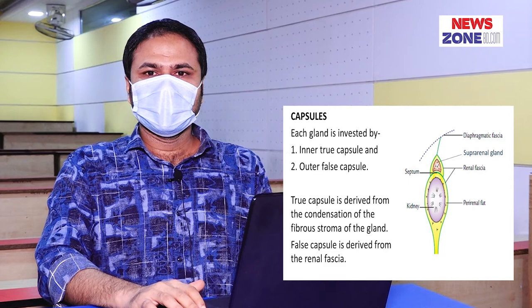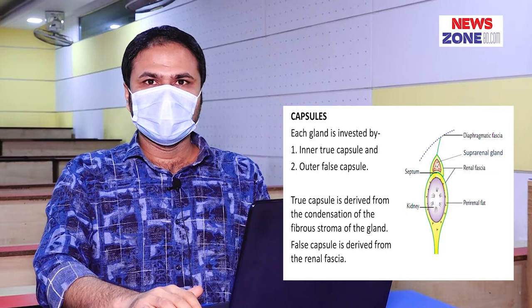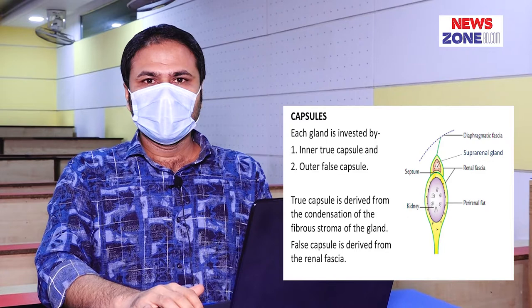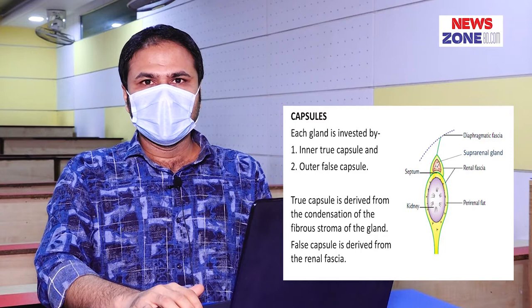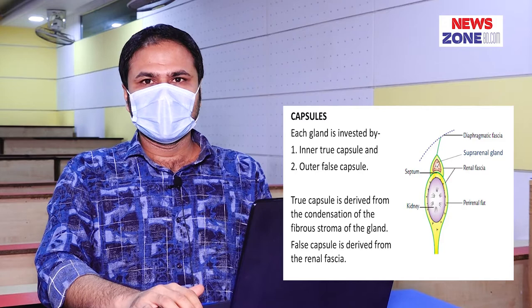Capsule of the suprarenal gland. Each suprarenal gland is covered by an inner true capsule and an outer false capsule. The true capsule is derived from the condensation of the fibrous stroma of the gland. The false capsule is derived from renal fascia. The two layers of renal fascia fuse at the upper end of the kidney, then re-split to enclose the suprarenal gland in a separate compartment. At the upper end of the suprarenal gland, these two layers fuse and are reflected to the diaphragm as the suspensory ligament of the suprarenal gland.